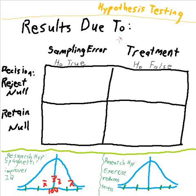For your decision matrix, along the top, we have to decide what the results are due to. The results could be due to sampling error, or they could be due to a real treatment effect.